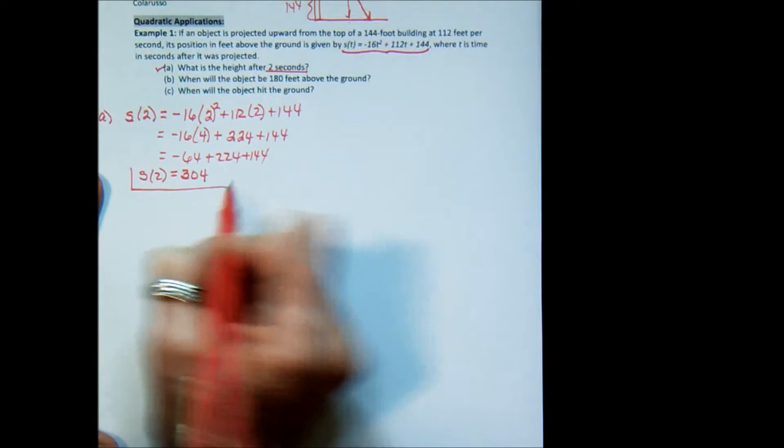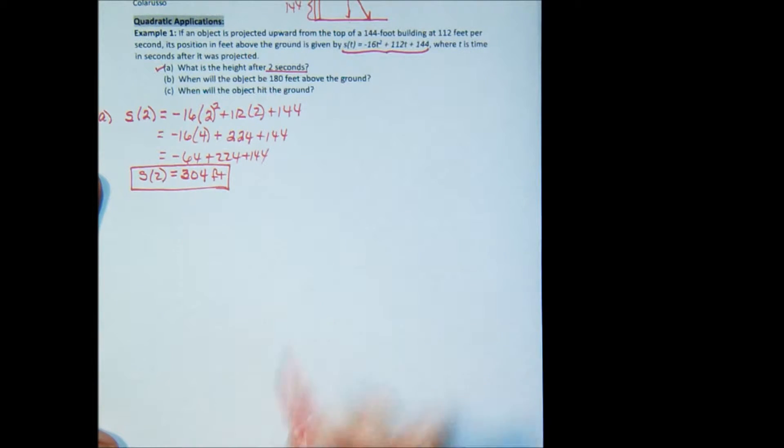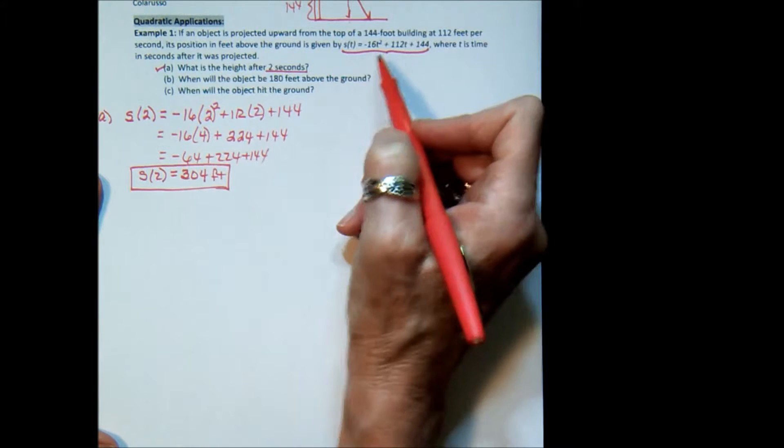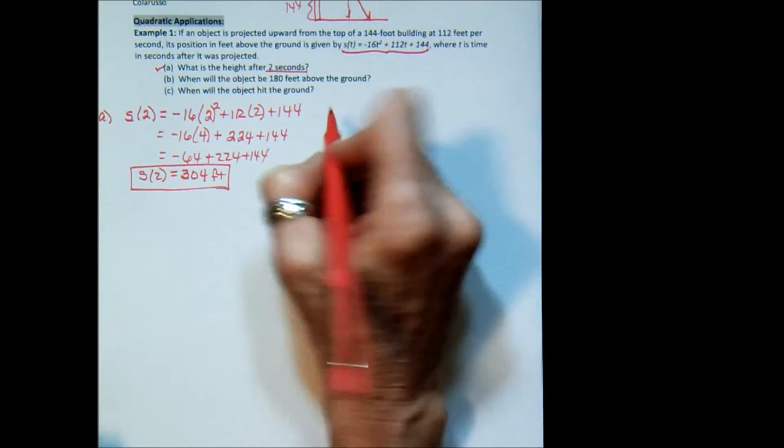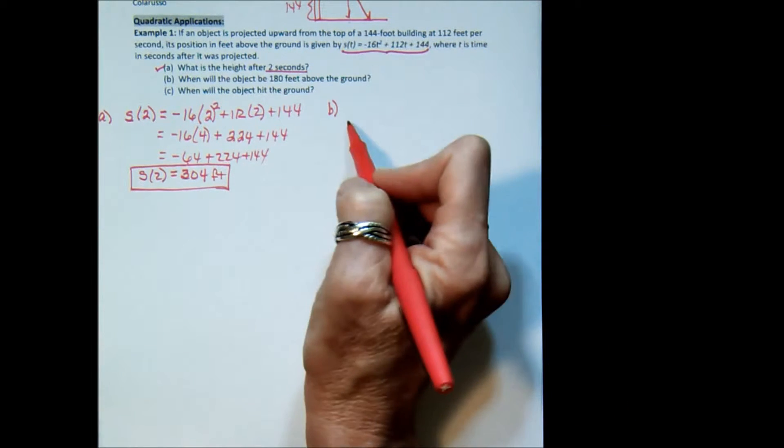So it says the height after two seconds, s(t), equals 304 feet. So that was the first thing. The first part of the problem, it was fairly simple, because we were just substituting a time into our equation for t. Let's look at the second part of the equation, or the second part of the question.